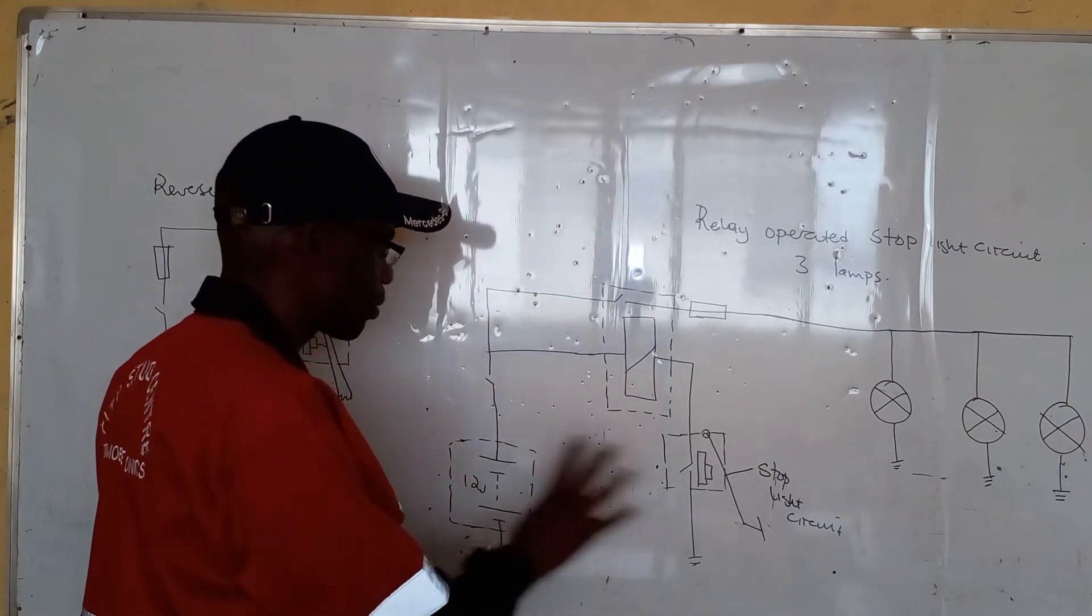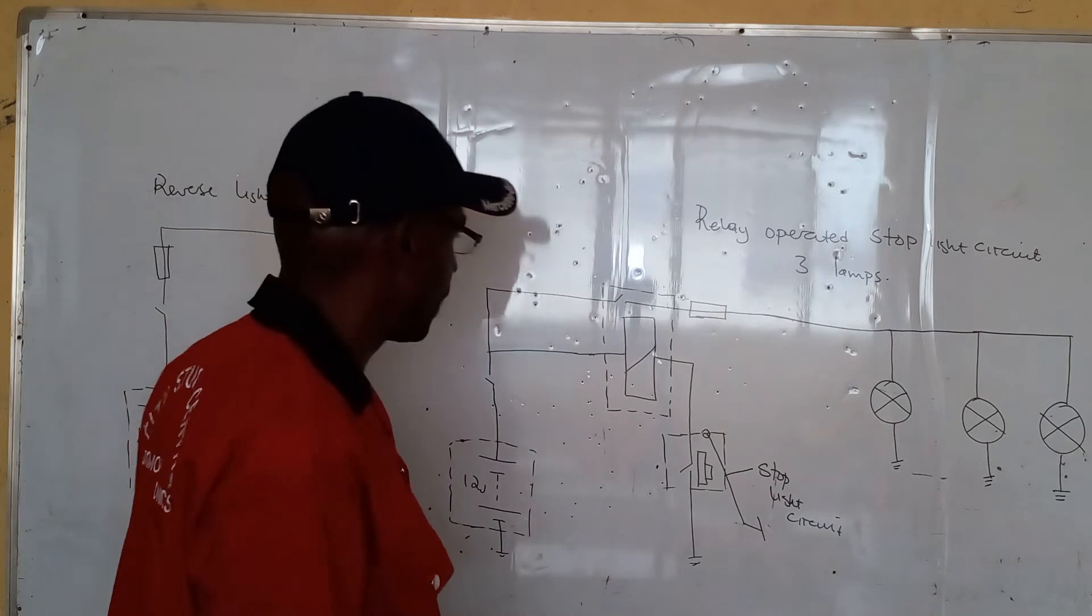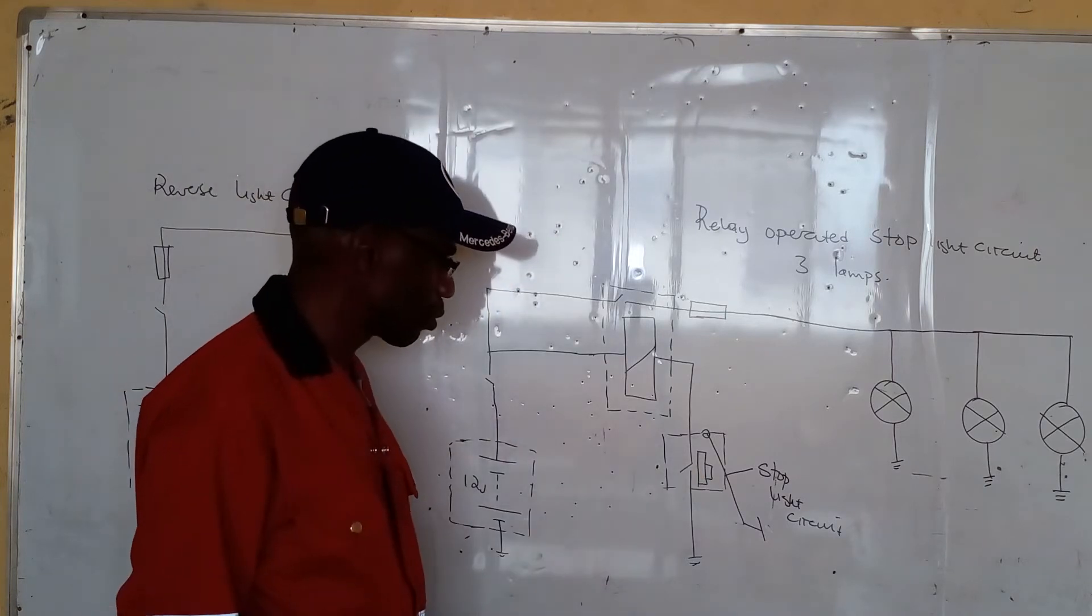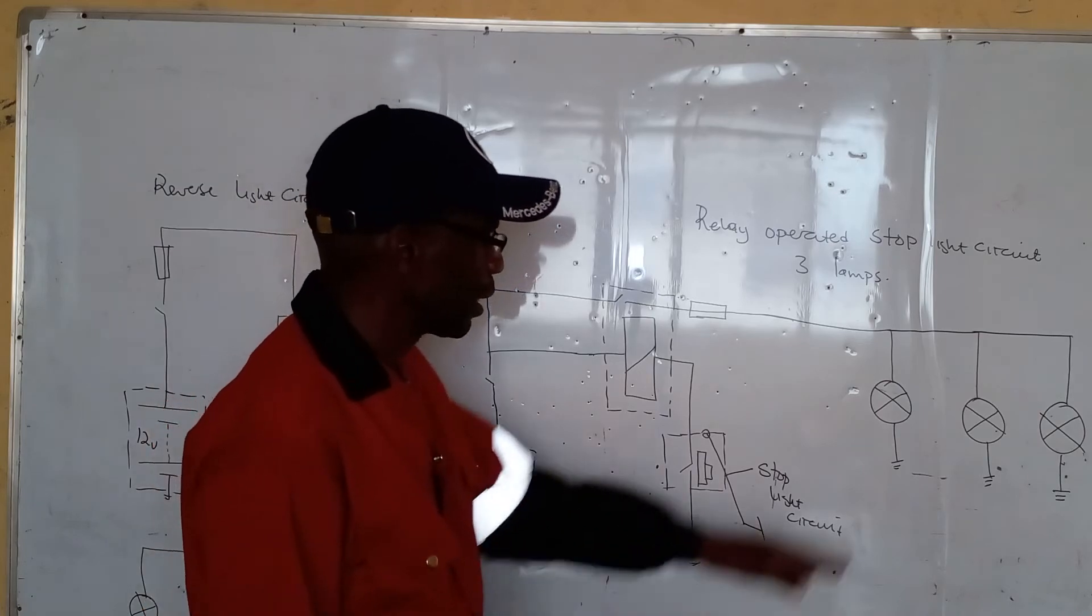The major components of this system are of course the battery. There is the relay itself, there is the stoplight switch, there is a fuse there, and three lamps.